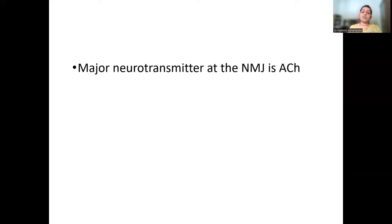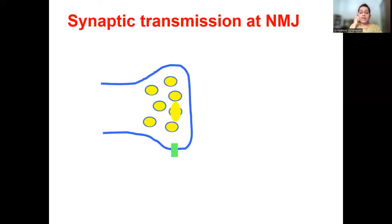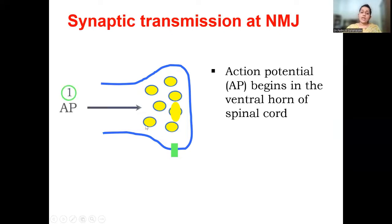The major neurotransmitter at the neuromuscular junction is acetylcholine. Now with that basic structural idea, we'll move on to synaptic transmission — how it is going to transmit. The action potential begins in the ventral horn of the spinal cord.